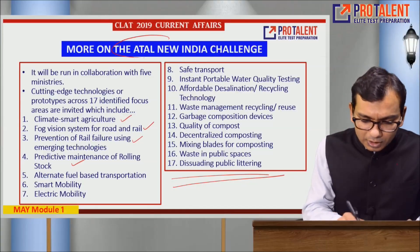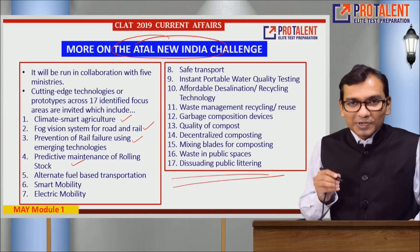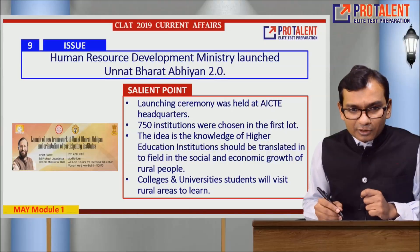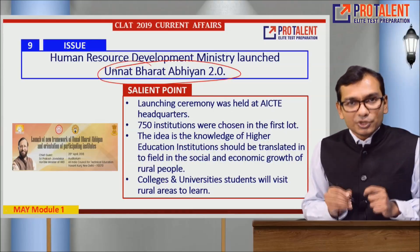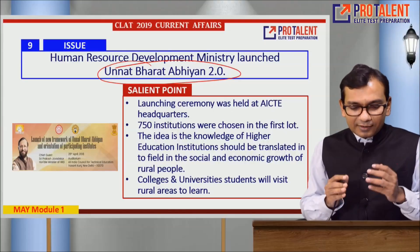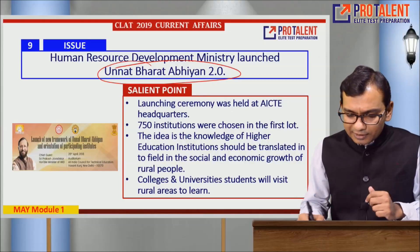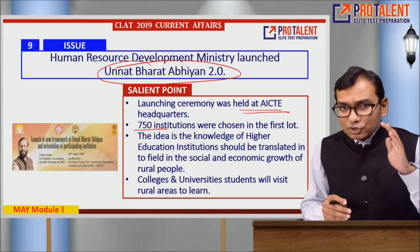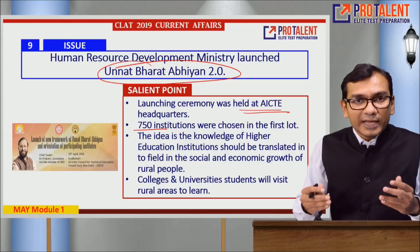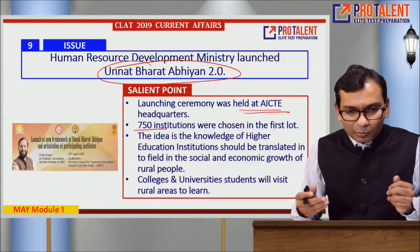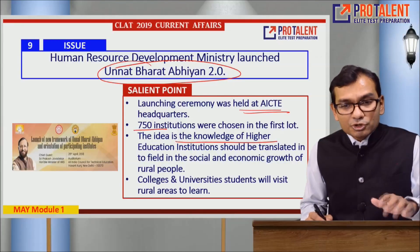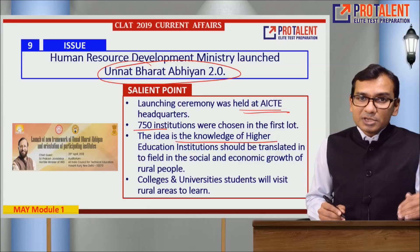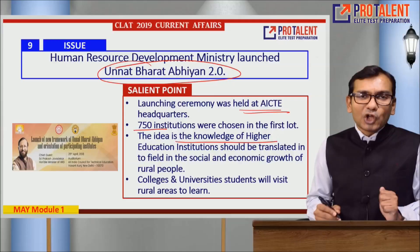Point nine: the Human Resource Development Ministry launched Unnat Bharat Abhiyan 2.0. It was held at AICTE headquarters and 750 institutions were chosen in the first lot. Students from these 750 institutions will go to rural areas to learn about India and translate knowledge from higher education institutions into social and economic growth for rural people — giving their knowledge back to those communities.